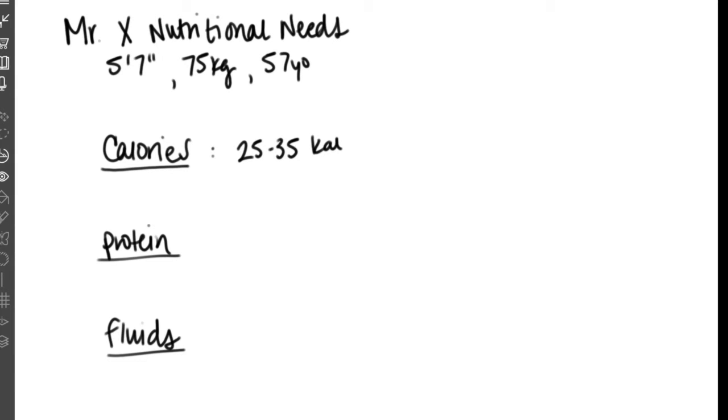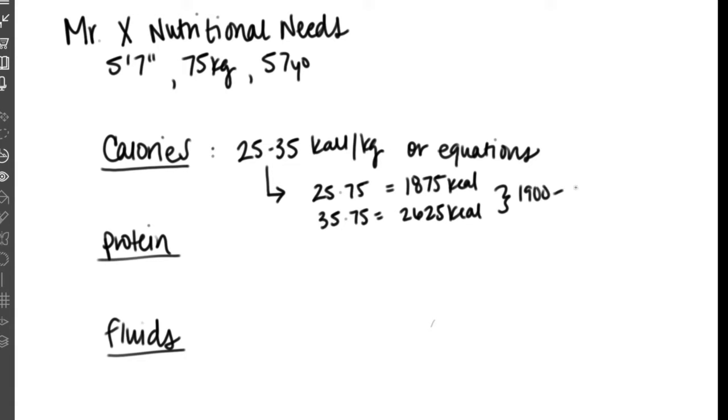There are multiple ways to calculate calorie needs in patients. The current oncology research recommends anywhere between 25 to 35 calories per kilogram. We can also use other predictive methods such as predictive equations like Mifflin-St Jeor, but for today, we'll use the calorie per kilogram method. When using 25 to 35 calories per kilogram and we multiply that by 75, that gives us a calorie range of 1900 to 2600.